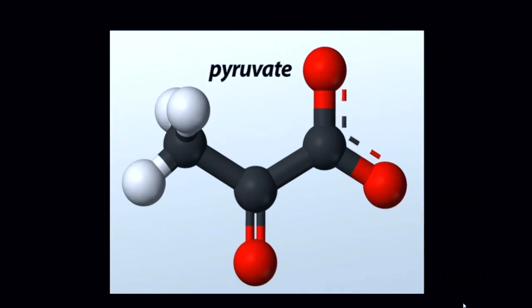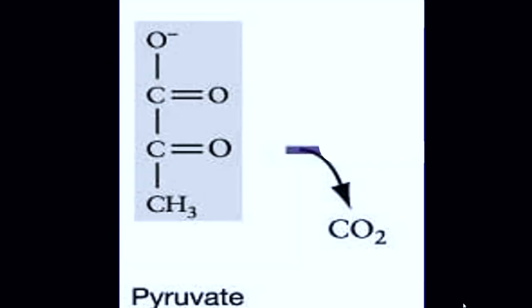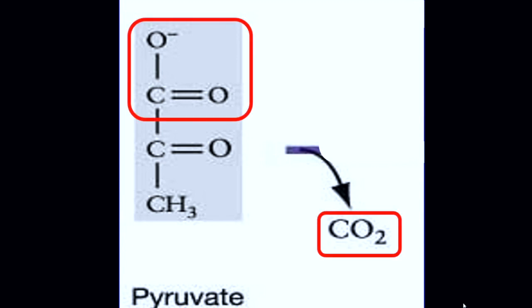The PDC works like a machine, so let's break it down. The cycle starts with a molecule called pyruvate — a molecule of three carbons produced in our bodies from sugar, specifically glucose. Pyruvate first interacts with the E1 subunit and undergoes two processes: first, a carbon dioxide is removed from pyruvate, forming a shorter molecule with two carbons.